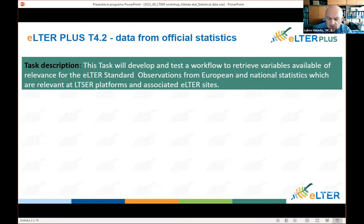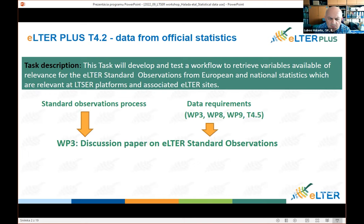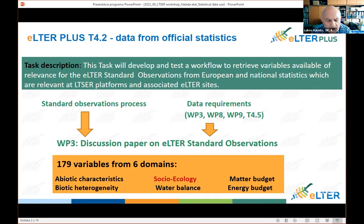This statistical data was prepared in LTR Plus Task 4.2, which aimed to prepare data for standard observation variables from official statistical data. We first needed to know which parameters or variables LTR needs. This information came from the standard observation process that started before our project began, and there were also some data requirements specified in some work packages.